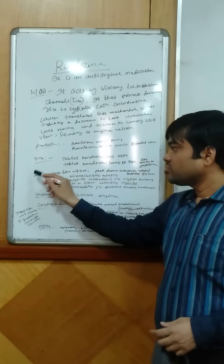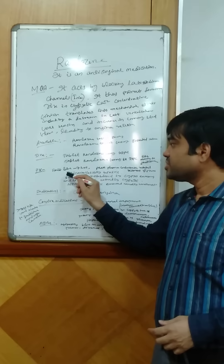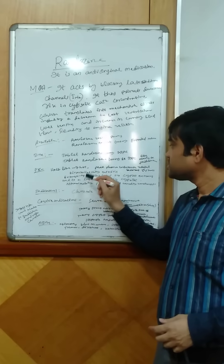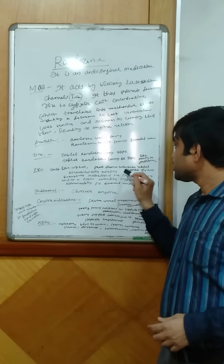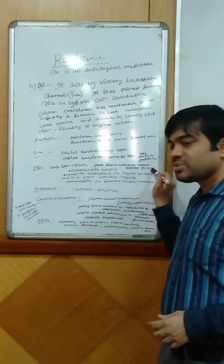Coming to the pharmacokinetic parameters: Tmax is 7 hours, and peak plasma concentration is reached between 2 to 5 hours.